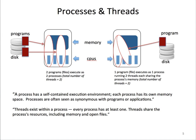We turn now from hardware concepts to software concepts and terminology. So here we have two compute nodes, each with some memory and four CPUs. On the left, we have two programs on disk being read into memory as two completely independent processes, each running in its own memory space, running on a single CPU, and executing its own set of instructions. These are single-threaded processes.